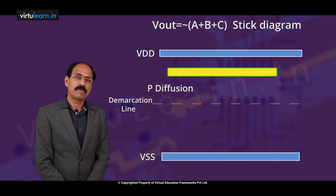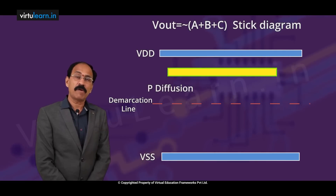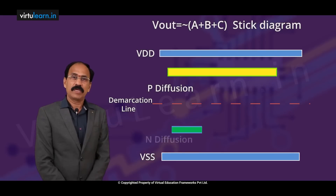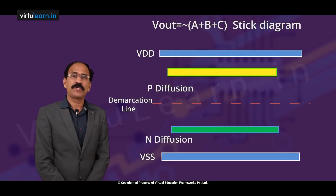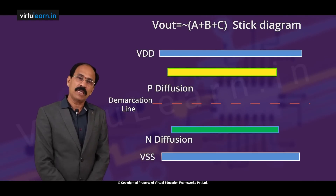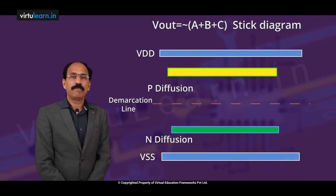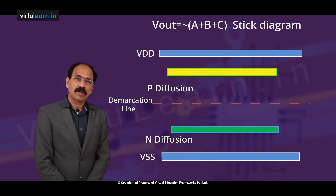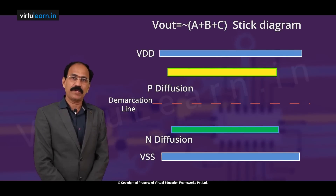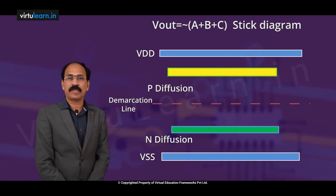P diffusion should not cross the demarcation line from the top. Similarly, N-plus diffusion should not cross from the bottom to the demarcation line. This is the rule. Polysilicon and metal can cross the demarcation line. Only P diffusion and N diffusion should not cross the demarcation line.